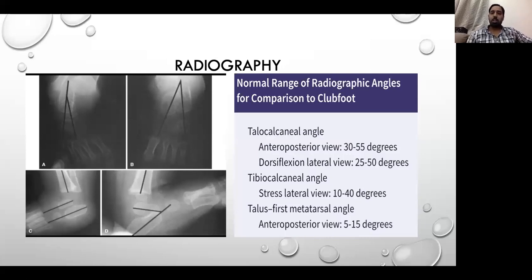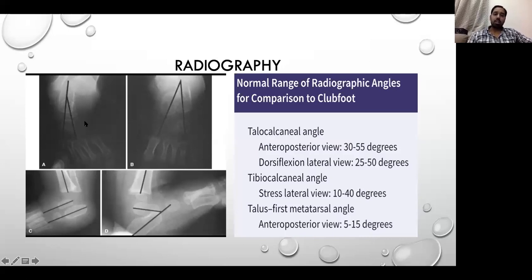The more commonly measured angle is the talocalcaneum angle. In the anteroposterior view, the normal range is 30 to 55 degrees, and in the dorsiflexion view, 25 to 50 degrees. If you see images A and B on the left side, A is a clubfoot and B is a normal foot, showing how the angle decreases in clubfoot.